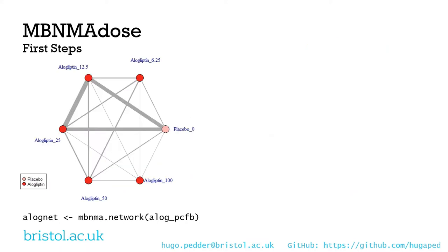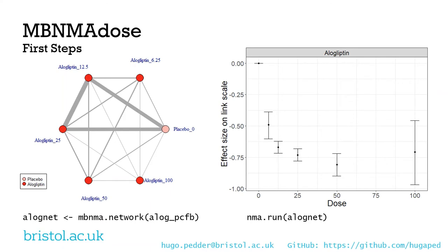That's what we can do with MBNMA-DOSE. The first steps are to load the data into a network object. Once we have that, we can look at our data more generally — plot network plots either at the dose level or at the agent level. To get an idea of whether there is a dose-response relationship and what it might look like, we can also run a simple standard network meta-analysis and plot the results at each dose of each agent on a graph. Here we can see for alogliptin that we have a non-linear dose-response, and we certainly wouldn't want to group those doses together without introducing heterogeneity.